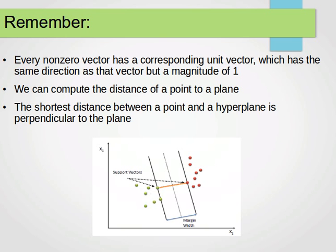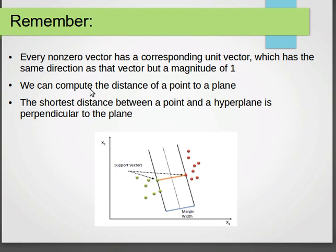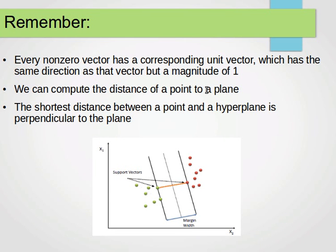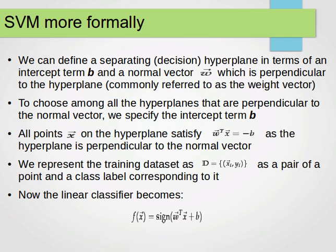Remember that every non-zero vector has a corresponding unit vector — it has the same direction as that vector but a magnitude of one. Also remember that we can compute the distance between a point and a plane, which is very important and essential in support vector machines. The shortest distance between a point and a hyperplane is perpendicular to the plane, i.e., the angle there is 90 degrees.